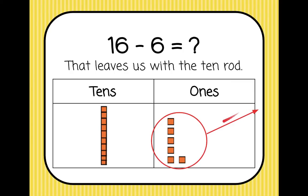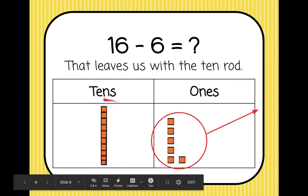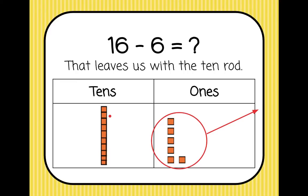And that leaves us with only the 10 rod. So if we have one 10, that is 10. So 16 minus 6 equals 10.